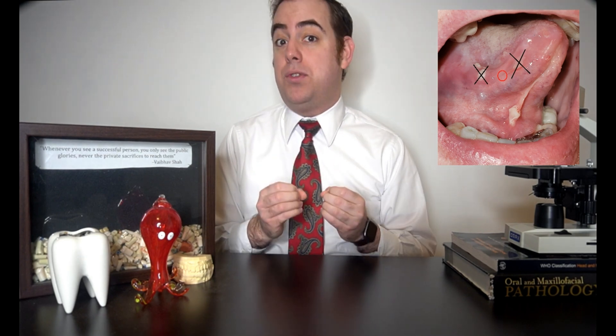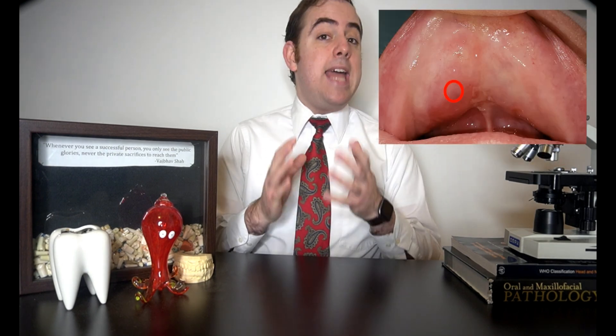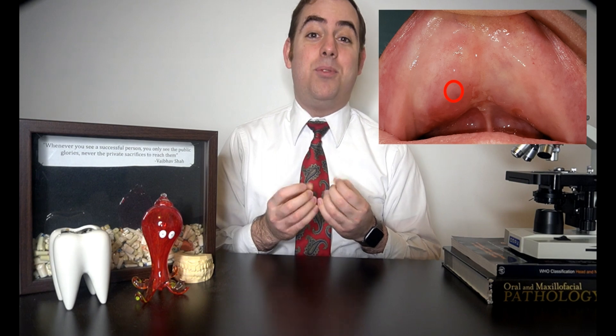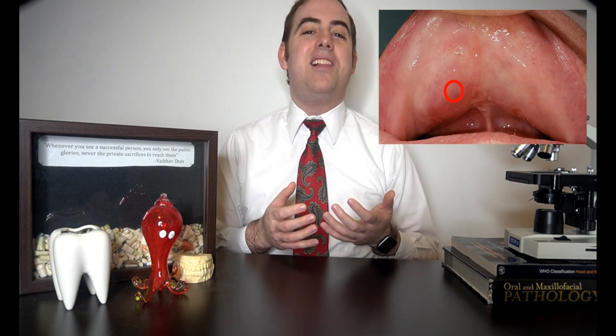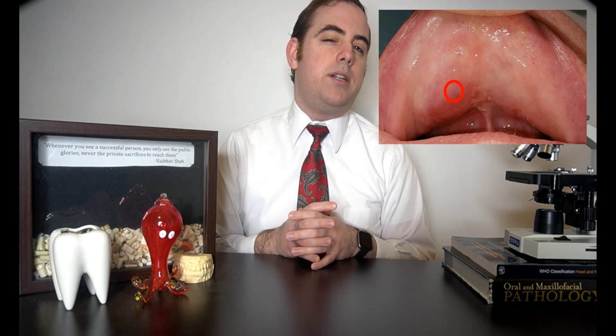Next, we have the vesicular, ulcerative, or erosive conditions. For these conditions, we will want to take perilesional tissue — tissue right next to the involved site. These conditions result in very fragile mucosa, so biopsying affected areas often results in the tissue just falling apart on biopsy. It's best to biopsy the most accessible areas to allow for the most diagnostic tissue. In this patient with suspected pemphigus vulgaris in multiple sites, I biopsied the lower labial mucosa, because the lower lip is extremely accessible and easy to see. Anterior buccal mucosa and anterior lateral tongue are also reasonable sites, though tongue biopsies are often more uncomfortable for the patient.